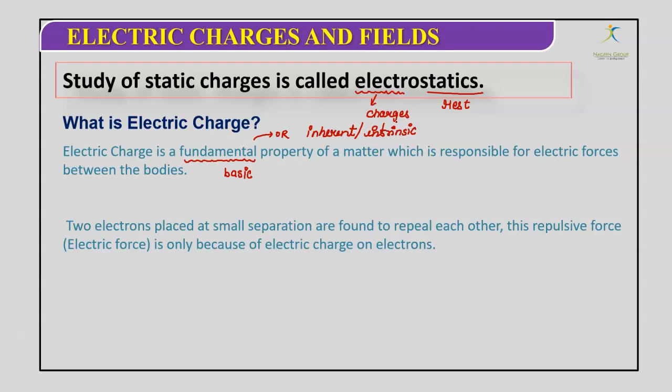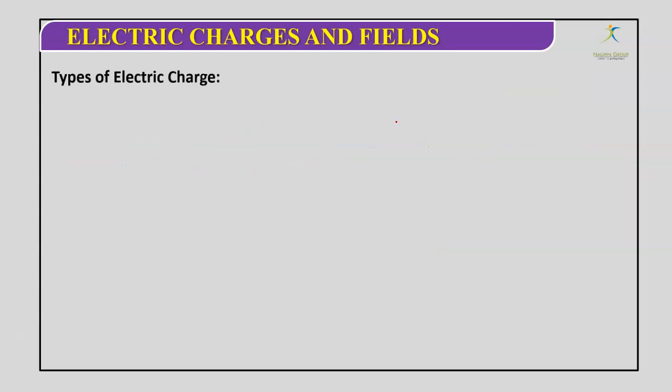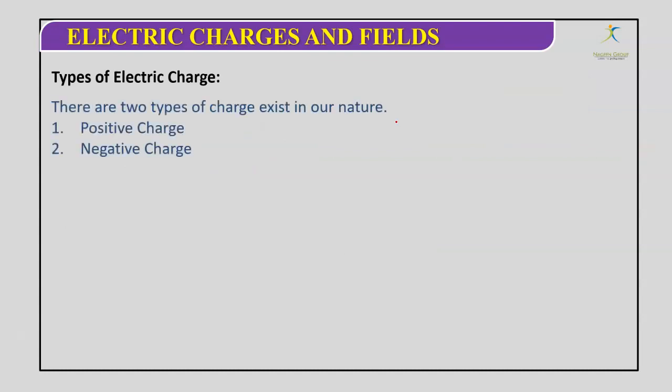For example, if we take two electrons placed at a small separation, we find they will be repelled. They will attract if they have different kinds of charges. So the interaction depends on the nature of the charge. There are two types of electric charge: the first type is positive and the second is negative. So basically charges are of two types which exist in nature.